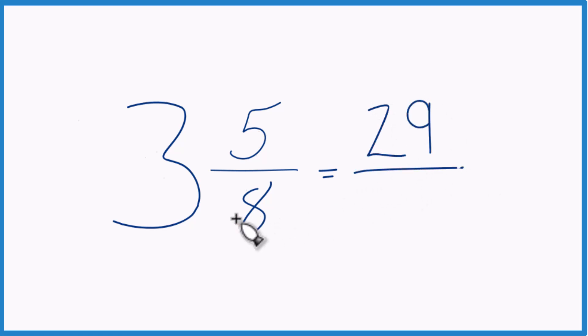Then you just bring the denominator across, our 8 here, and the mixed number 3 and 5 eighths, that equals the improper fraction, 29 eighths.